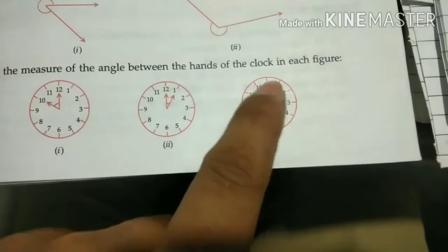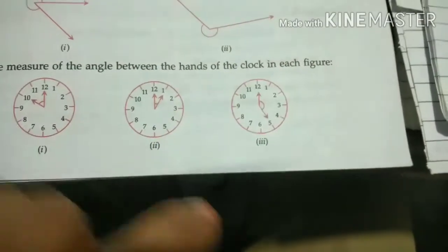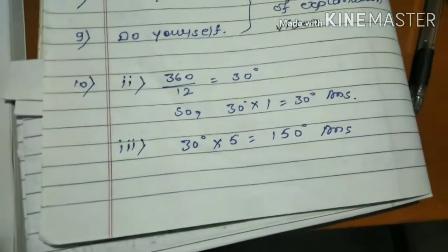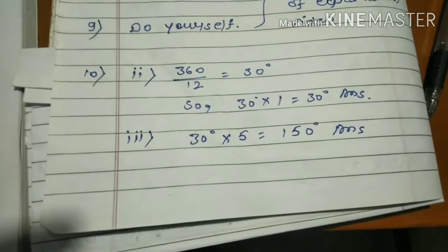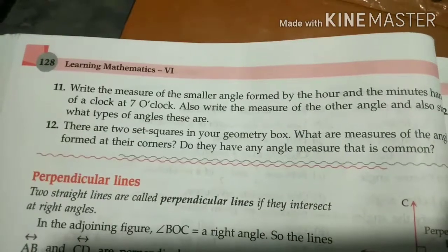Second part: 12 to 1, one point, so the answer is 30 degrees. Third part: 1, 2, 3, 4, 5 - five points. 5 times 30 equals 150 degrees. Just as I have solved, you do the remaining.